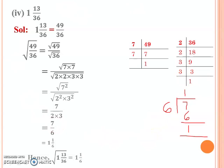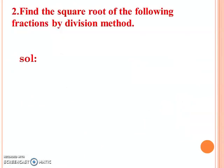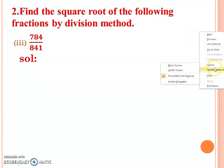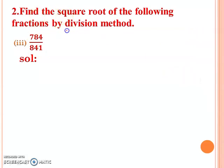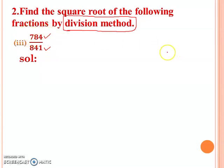So we have found the square roots using prime factorization method. Now let's do question number 2, in which you have to solve square roots using the division method. The first part is the third part: 784 over 841. Here you will use the division method, following all the steps from the previous lecture.